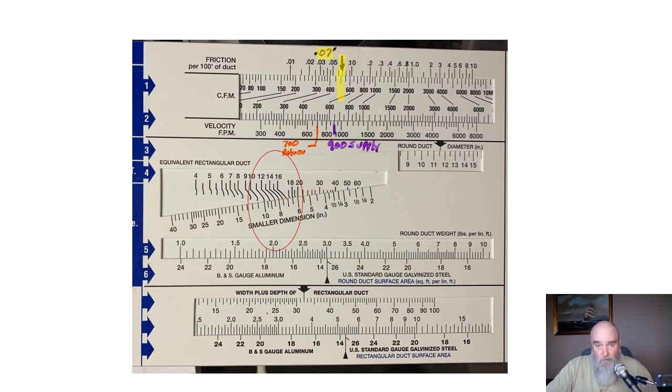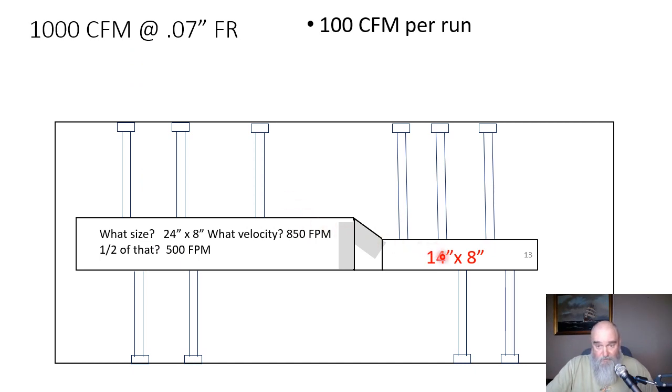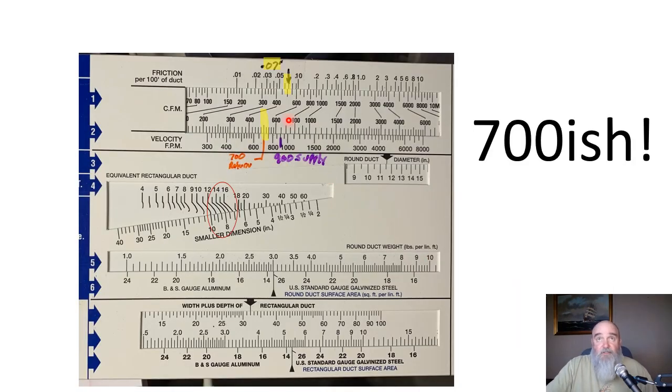So I got 14 by 8. How fast is it moving? It being that remaining 500 CFM. Grab the duct slide again and I might be off by a skosh but I don't care, it's close enough for me. I have my 500 CFM and it's lining up with about 700 or 700-ish in a piece of 14 by 8 ductwork. That's how you reduce your trunk.